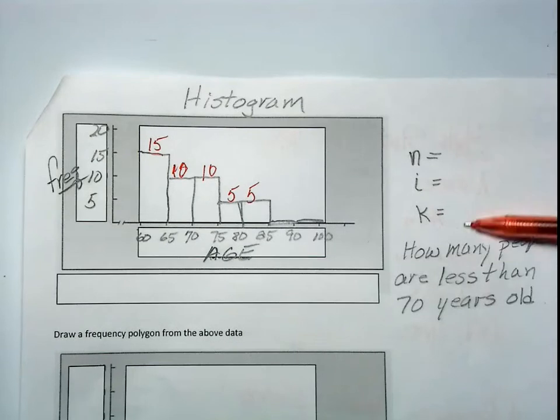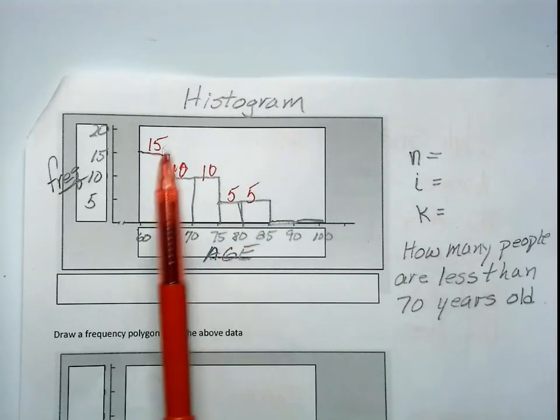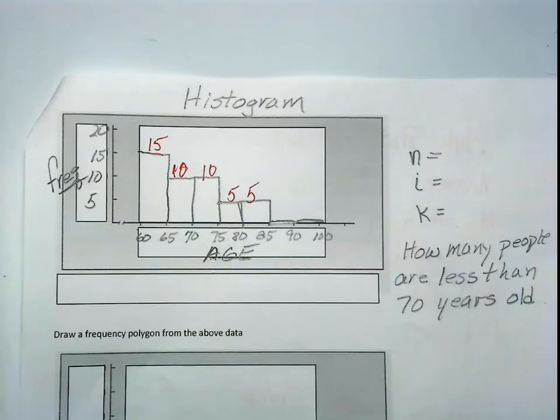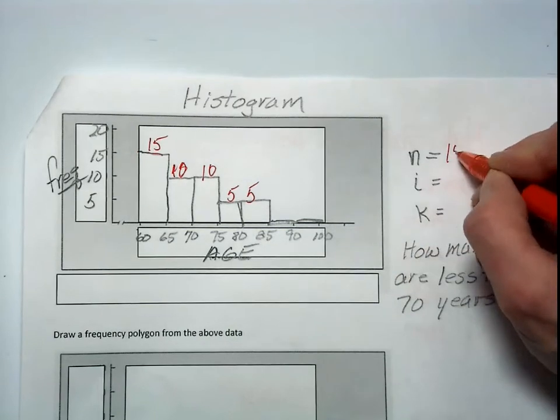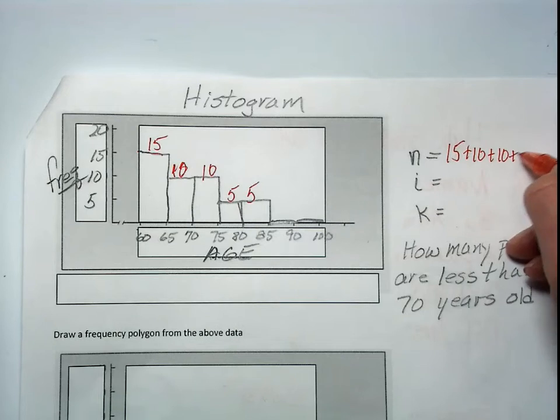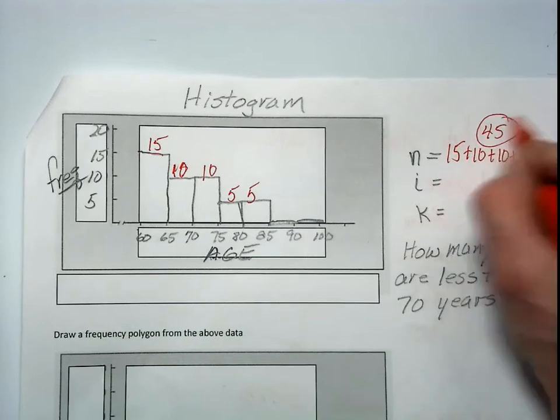So let's look at some of these three variables, n. As I mentioned before, n is the total sample size. From this histogram, you can calculate the total sample size. 15 plus 10 plus 10 plus 5 plus 5 is 45, which is the total sample size.